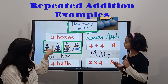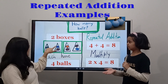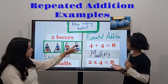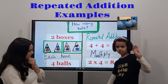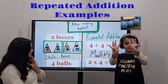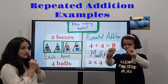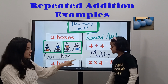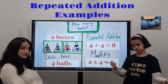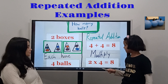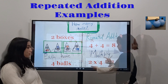You can do the other way too. I see two boxes and each have four balls. How can we do it in repeated addition? Four plus four. Let's count: one, two, three, four, five, six, seven, eight — yeah, eight. And in multiplication, how can we write it? That is two times four — two groups of four balls.